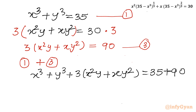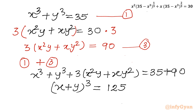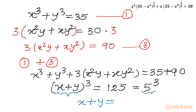The left hand side is the algebraic identity for (a plus b) cubed. So we can write (x plus y) cubed equal to 125 on the right hand side, which is 5 cubed. Since the exponents are the same, we can equate the bases. So the conclusion is x plus y equals 5.